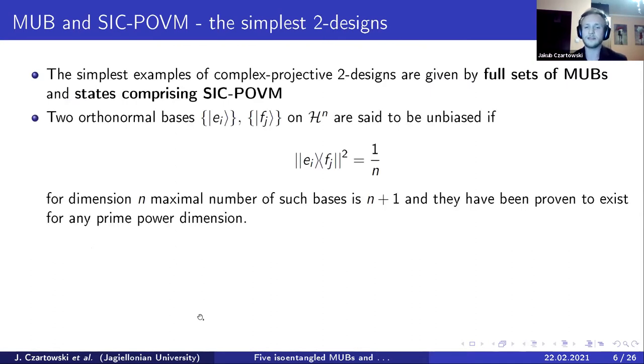the MUBs were already mentioned. So given two orthogonal bases, e_i and f_j, they are said to be unbiased on space of n dimension if their inner product (sorry, this should have been an inner product, my mistake, so there will be another one in a second) is equal over all the states. And in principle, for n dimensional space, there is a maximum of n plus one such mutually unbiased bases.